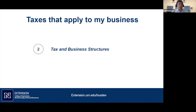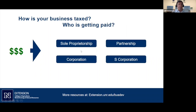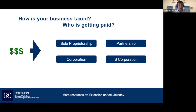Section Two: Tax and Business Structures. In this section we'll talk about business structures and how the three tax rates apply to each. The key question from a tax perspective is always: who is getting the money? There are four main structures we'll focus on: sole proprietorship, partnership, corporation, and S corporation.